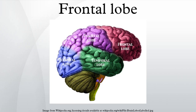The frontal lobe contains most of the dopamine-sensitive neurons in the cerebral cortex. The dopamine system is associated with reward, attention, short-term memory tasks, planning, and motivation. Dopamine tends to limit and select sensory information arriving from the thalamus to the full brain.